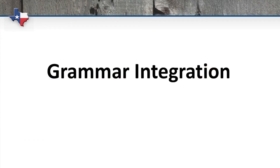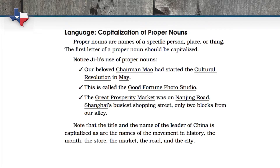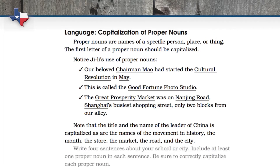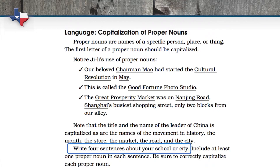Grammar is typically an area of struggle for many students. Immediately following the close reads and focus on skill exercises, Connections provides a language lesson that examines a specific aspect of grammar within the chapter's passage — grammar in context and integrated into the reading, again just like the new TEKS require.